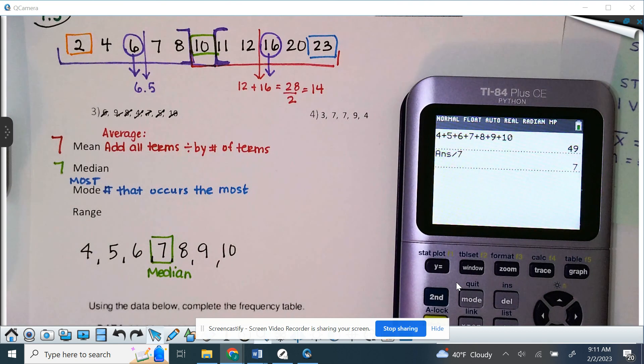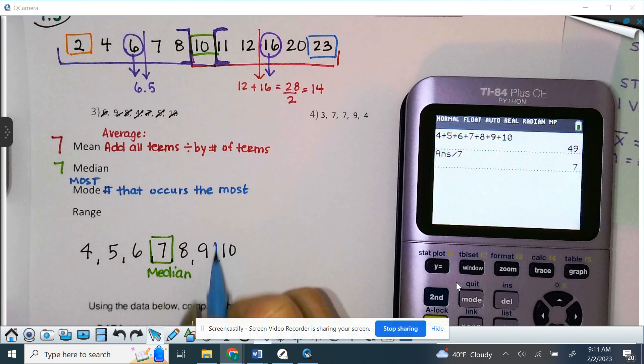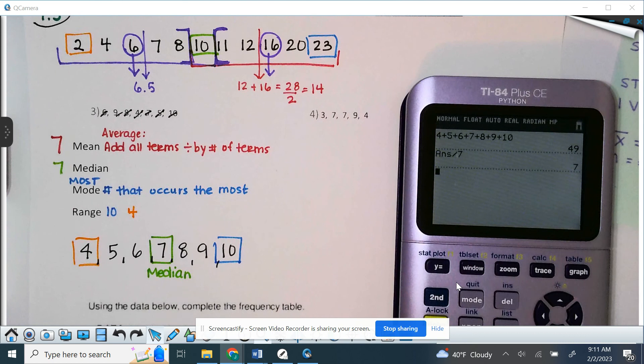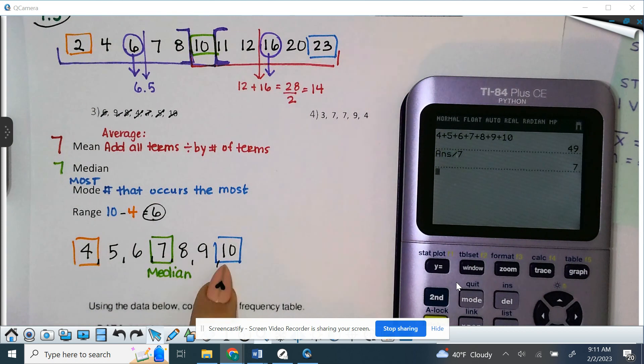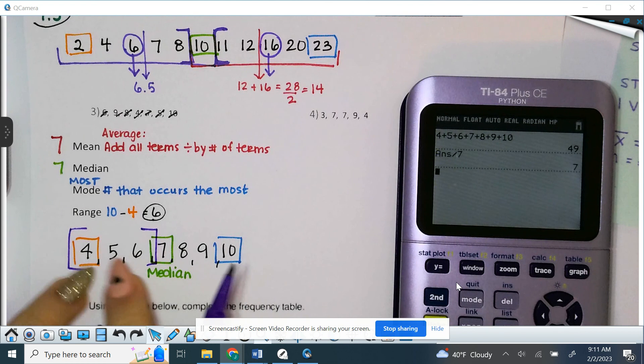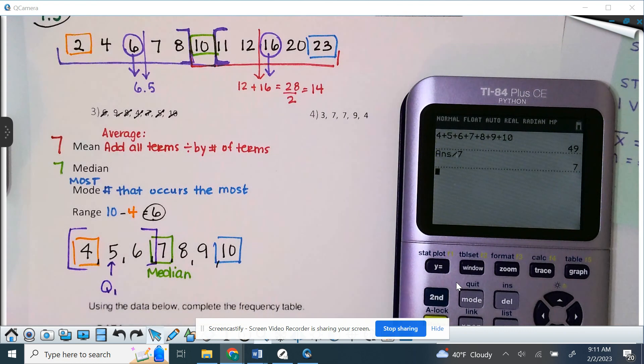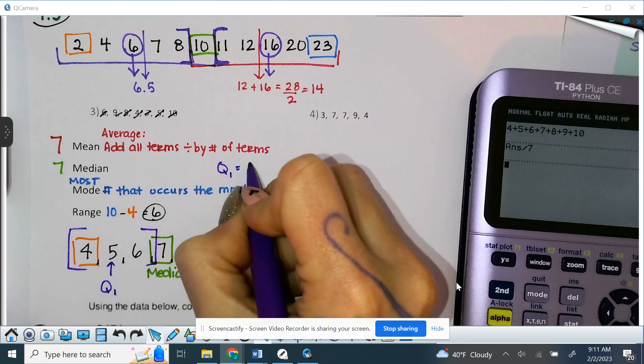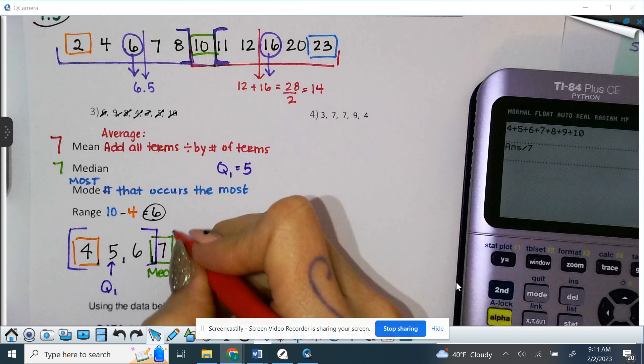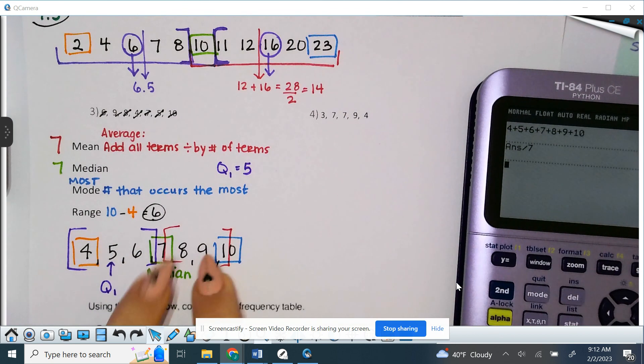Again, range is going to be your max minus your min. So, our max is 10. Our min is 4. So, 10 minus 4. And that's 6. Not in the list over here for us to do, but let's do it anyway because it's a small set of numbers. Our Q1. So, Q1 is the middle of the upper half. So, this is going to be our Q1 and that's quartile 1. That's 5. And then our Q3 because Q2 is median. So, Q3 is the middle of the upper half. So, 10, 8, and the middle is going to be 9.